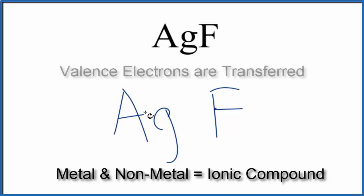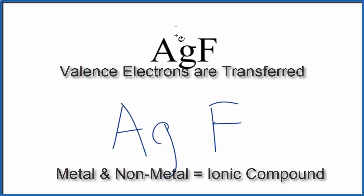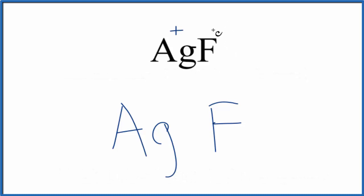The metal is going to transfer valence electrons to the non-metal. So silver, although it's a transition metal, it always has an ionic charge of 1+. The fluorine always has an ionic charge of 1-.